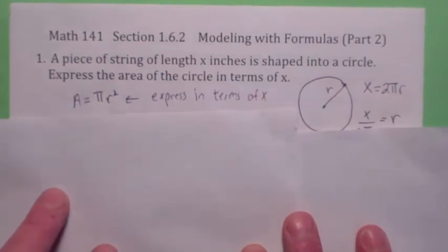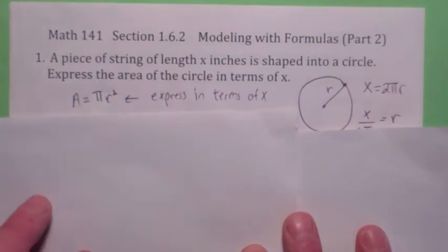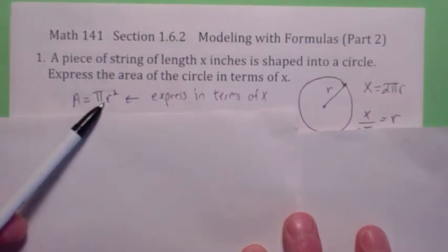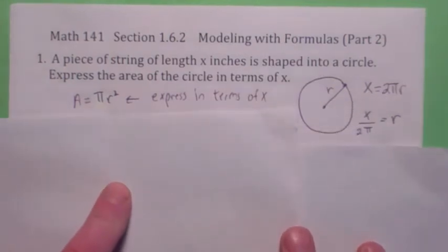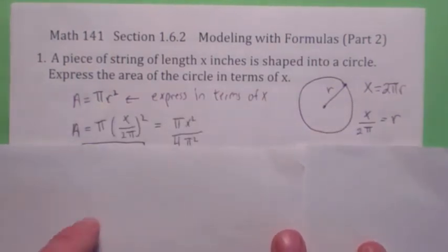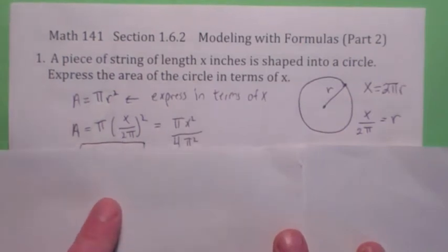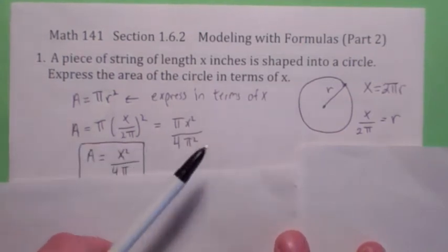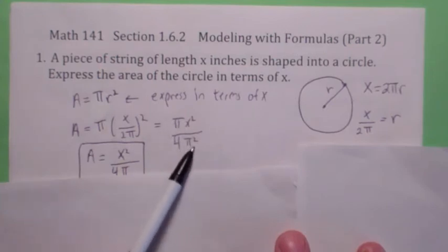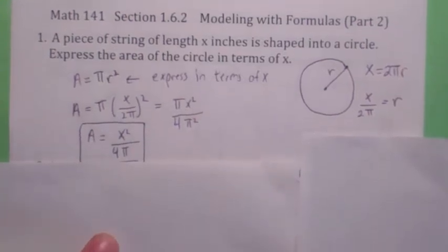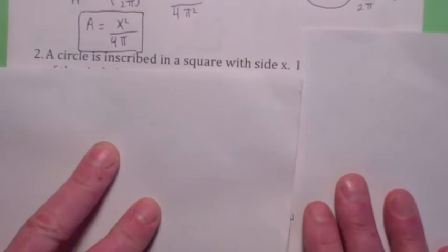So this is very common. I know these might seem hard, but when you do a few of them, you start to get used to how they work. Alright, so we're getting rid of r. So you solve this equation for r and then you plug it back in. Wherever there's a r, you plug in x over 2 pi. You square it, simplify it. You get pi x squared over 4 pi squared. You can cancel one of the pi's. So the area equals x squared over 4 pi. So get used to that. That's the kind of reasoning you have to get used to.